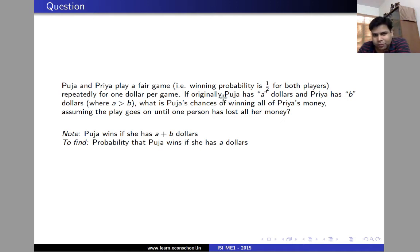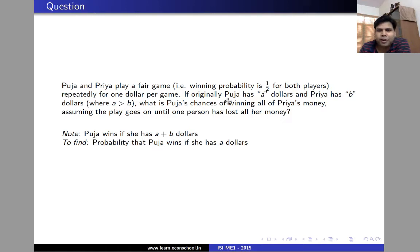Hi, welcome. In this video we'll solve the following problem. Suppose Pooja and Priya play the following game in which they toss a coin in every round. If it hits then Priya gives Pooja one dollar, and if it tails then Pooja gives Priya one dollar.